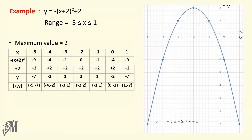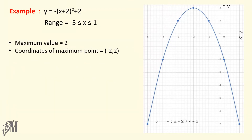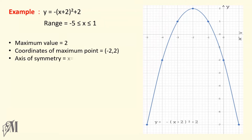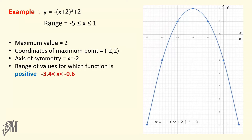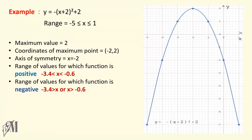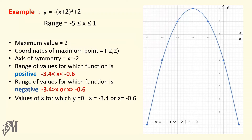Look at the features. The maximum value is 2. The turning point is (minus 2, 2). The graph is symmetric along the axis x equals minus 2. The function is positive when x lies between minus 3.4 and minus 0.6, and it is negative when x is less than minus 3.4 and when x is greater than minus 0.6. The roots of the function are x equals minus 3.4 or x equals minus 0.6.